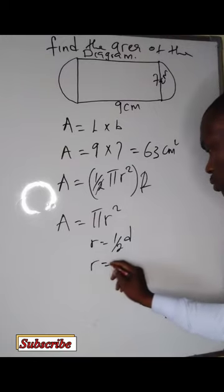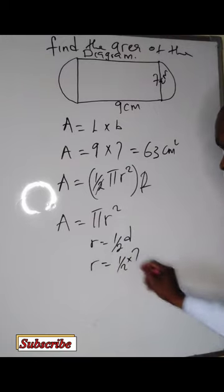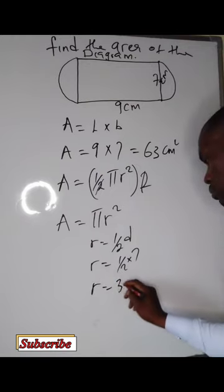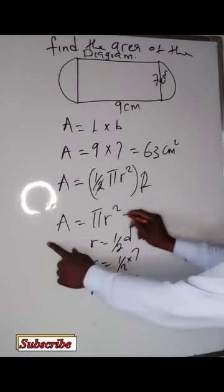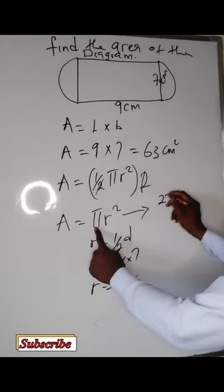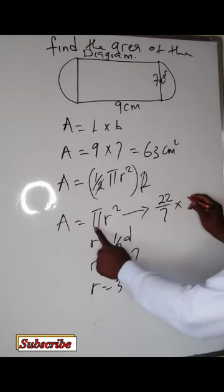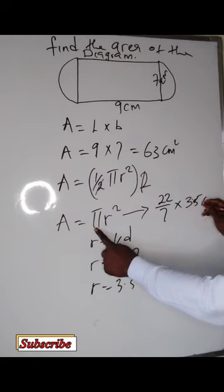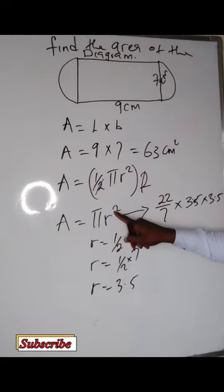So my r will be equal to 1 over 2 times 7, which is 3.5. So we are using 3.5 to solve. Pi is 22 over 7 times 3.5 times 3.5, since it is squared.